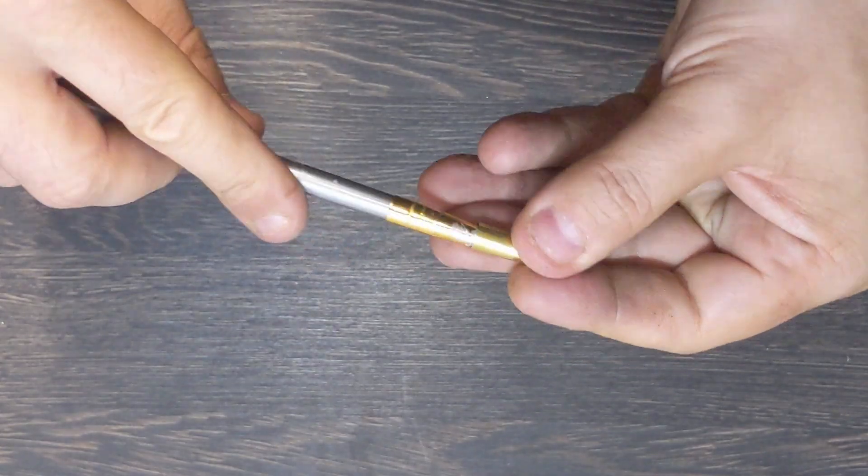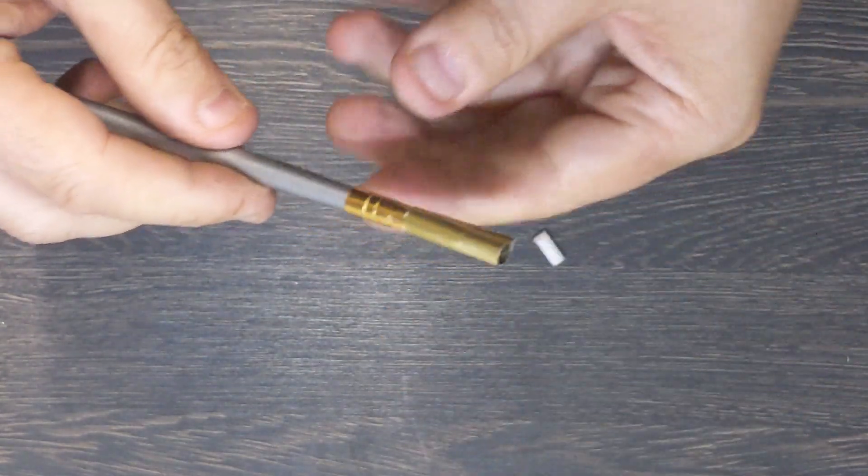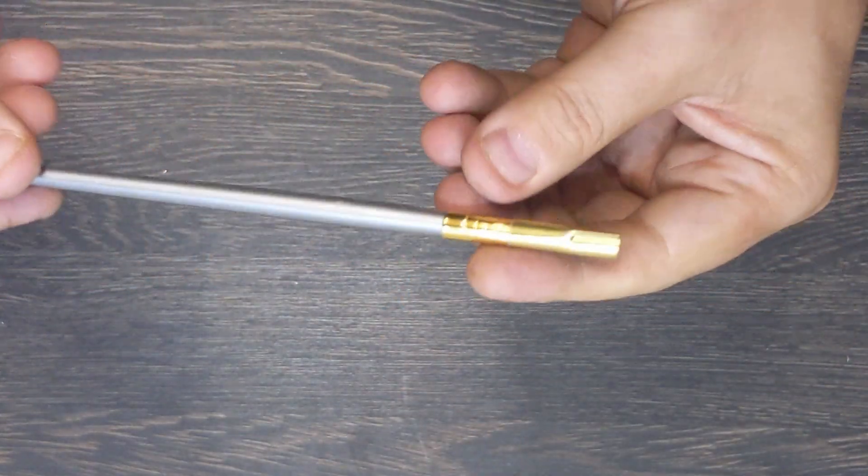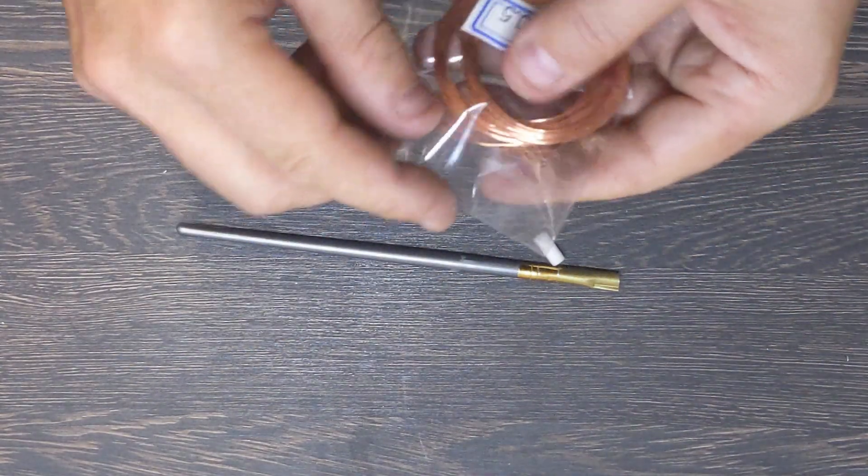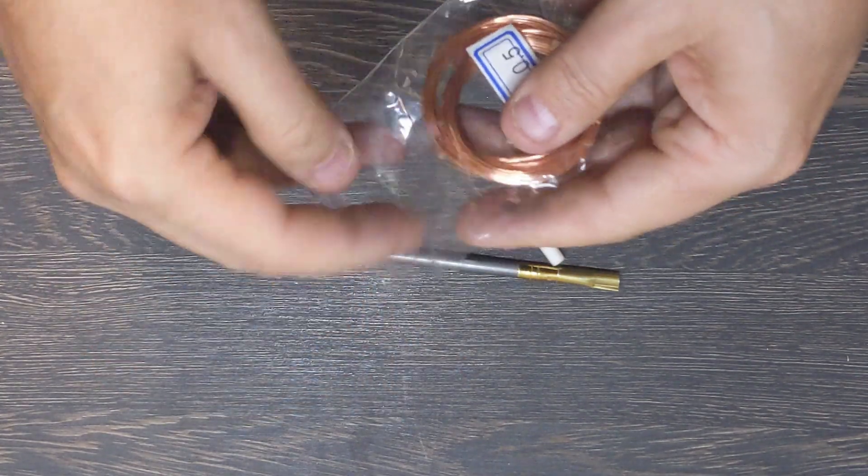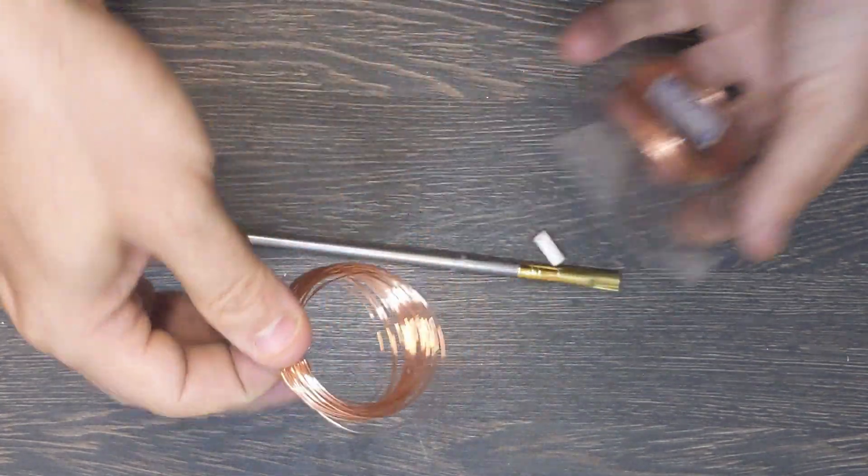And let's just pop that tube back on the end and that's it. That's the main body complete. Simple as that. Now obviously it's not going to work without some way of getting the electricity down to the tip, so I'm using some half millimeter copper wire.